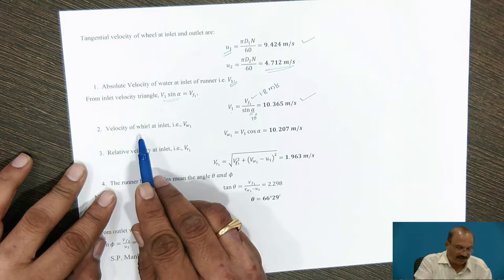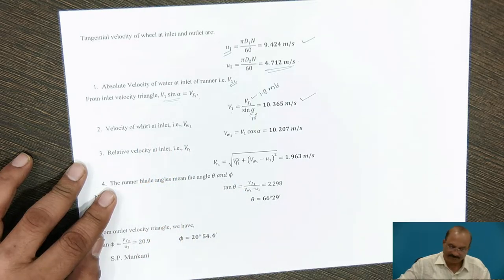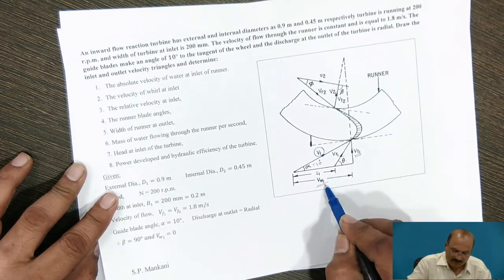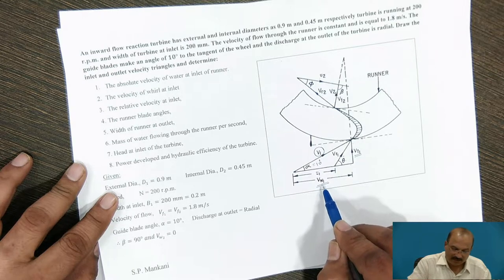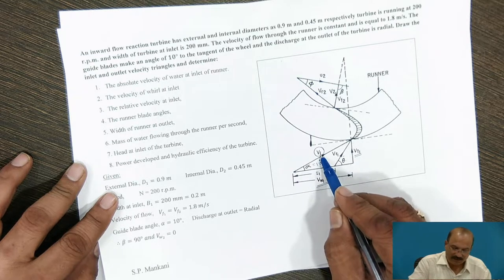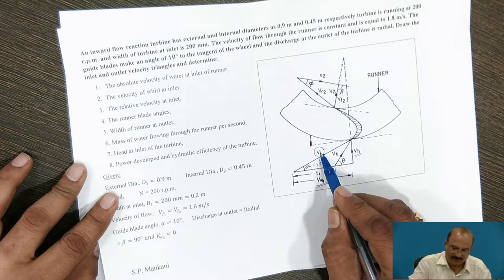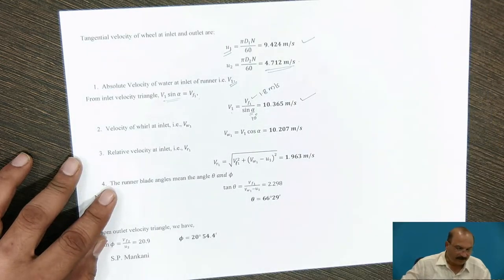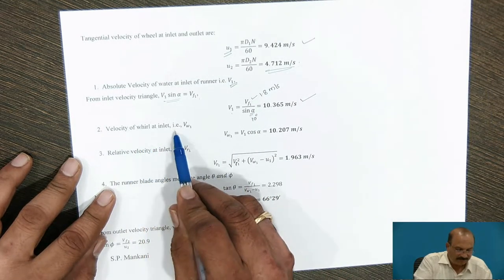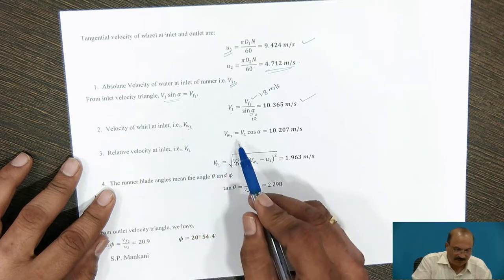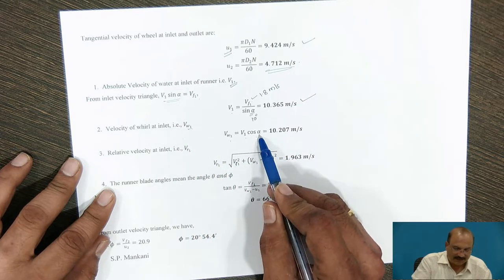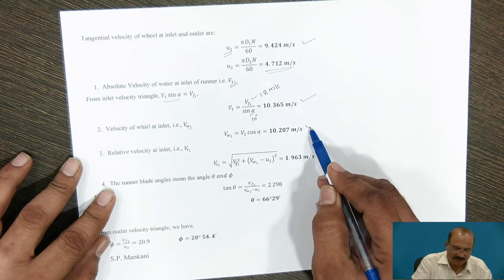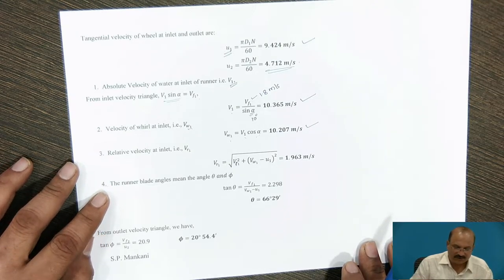For the whirl velocity at inlet Vw1, we take the horizontal component of V1: Vw1 = V1 cos(alpha). With alpha = 10 degrees and V1 = 10.365 m/s, substituting these values gives Vw1 = 10.207 m/s.